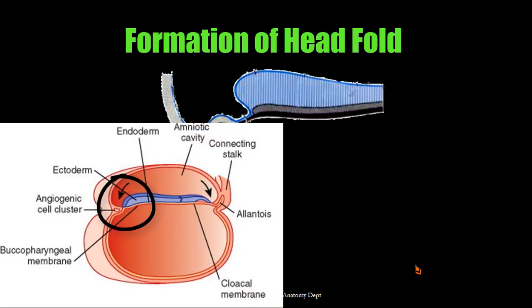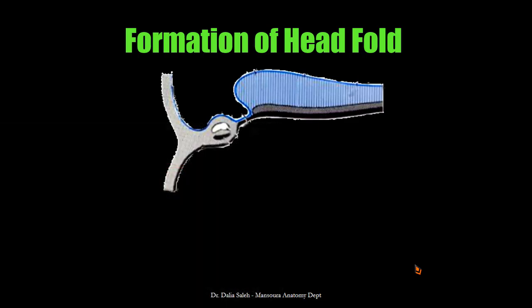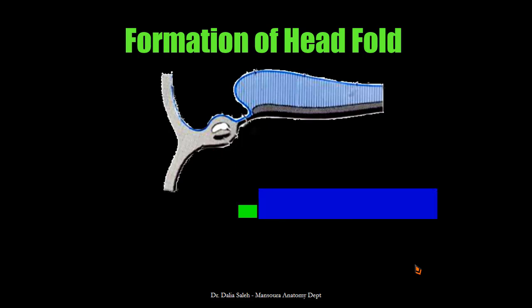Starting with cephalocaudal folding and the formation of the head fold: in this picture you can see the neural tube, and because this is the brain region it expands. Cranial to it lies the buccopharyngeal membrane, and cranial to that lies the developing heart and its pericardial cavity. Cranial to that lies a piece of mesoderm we call the septum transversum. This septum will later on give us part of the diaphragm. The neural tube, the buccopharyngeal membrane, the heart, and the septum transversum are arranged in this order.